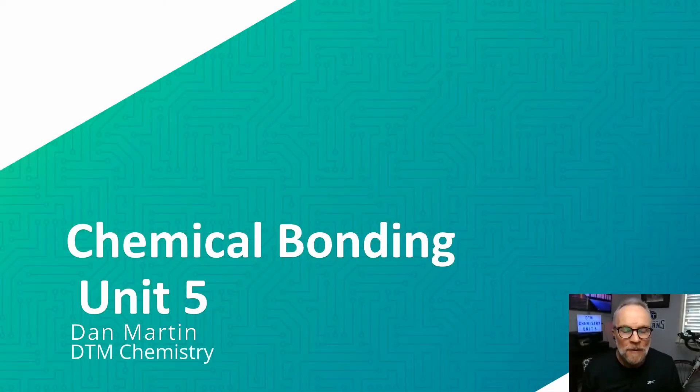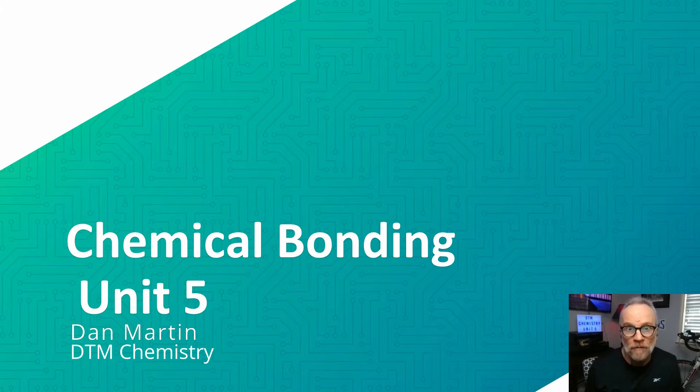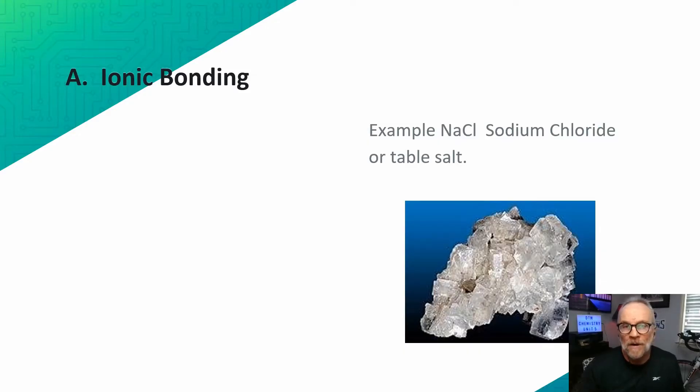Hello, welcome to Unit 5, Chemical Bonding. In this unit, we will be discussing different types of chemical bonds and predicting what type of elements form those bonds. We will start with ionic bonding.